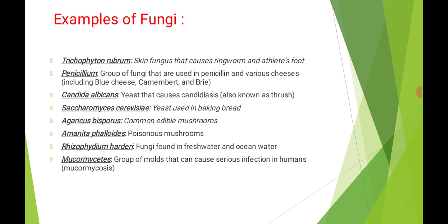Now let's see the examples of fungi. The first example is Trichophyton rubrum. Trichophyton rubrum is a skin fungus that causes ringworm and athlete's foot. Sometimes a reddish, round structure occurs on the skin of humans — this is called a fungal infection, and it is caused by Trichophyton rubrum.